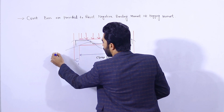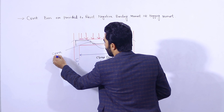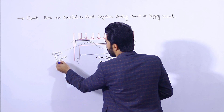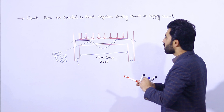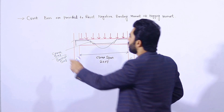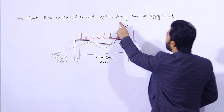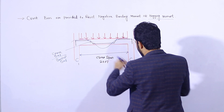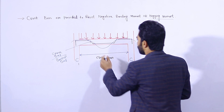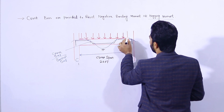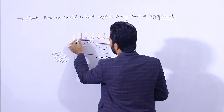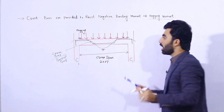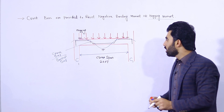This is called the crank bar, or you can say bent-up bar. These crank bars are provided to resist the negative bending moment, or hogging moments. Here you can see this is the positive bending moment, and this is the negative bending moment here.